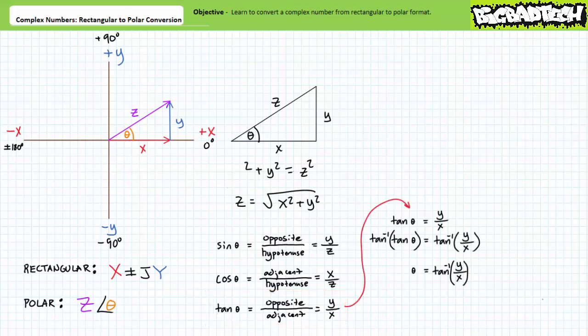We'll use the tangent relationship since it's the most direct means of solving for the angle. By rearranging and taking the inverse tangent of both sides, the angle theta equals the inverse tangent of the imaginary y over the real x.